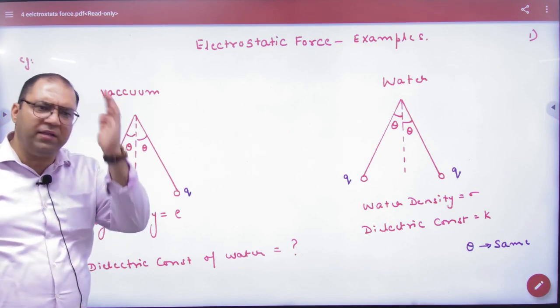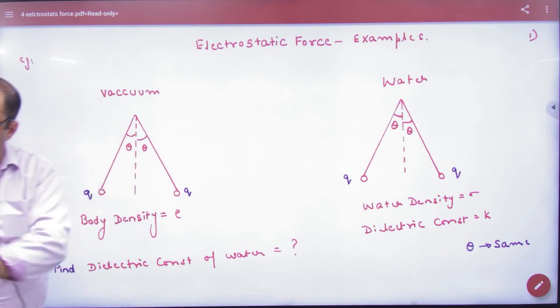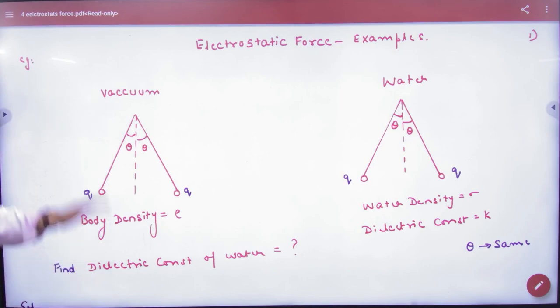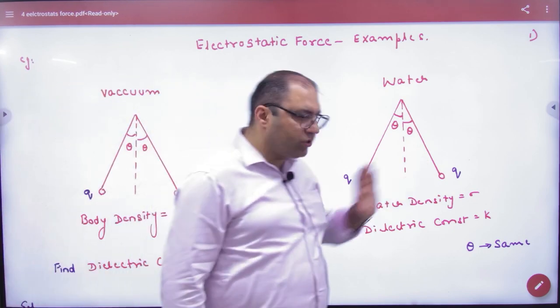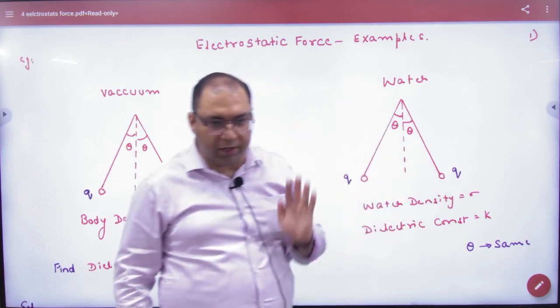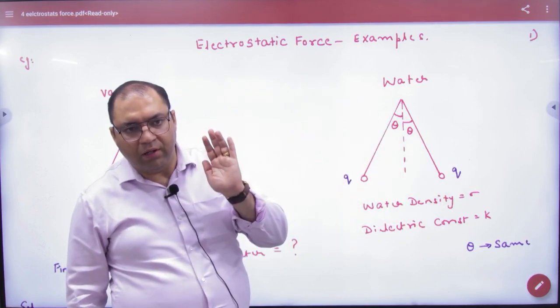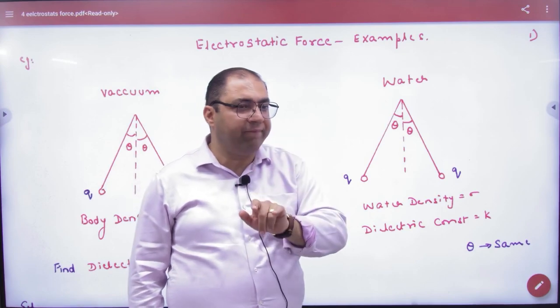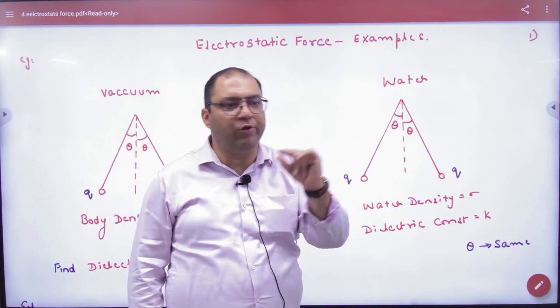Just like I had made a 60 degree angle, theta-theta. Equilibrium is given. I have put the whole arrangement into the water. The density of water was sigma, the body was rho, and the theta remaining in the same question. Theta has not changed. The dielectric constant of water is k. You have to find the value of k.